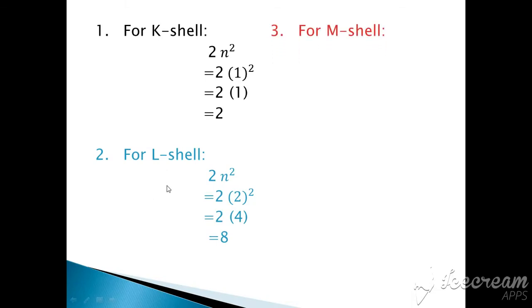It means maximum 8 electrons can enter in shell L, second shell. Third shell, you can easily find out 3 square is 9 and 9 twos are 18. Maximum 18 electrons can come.